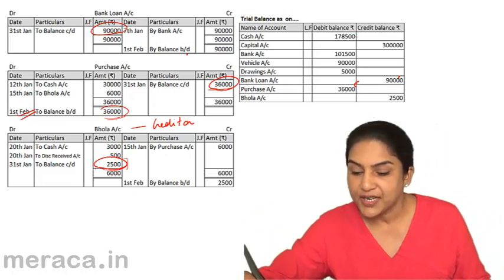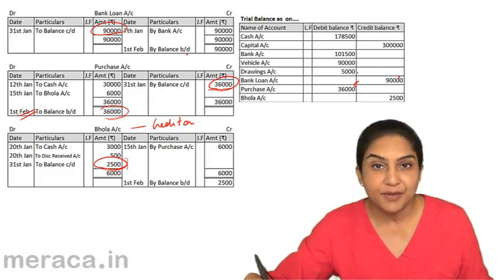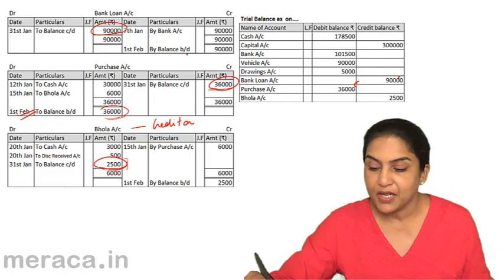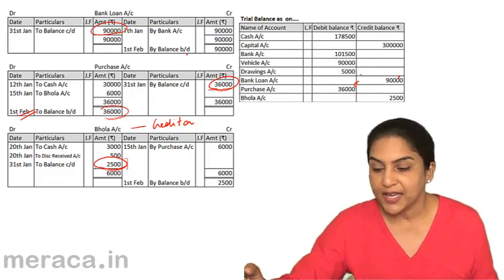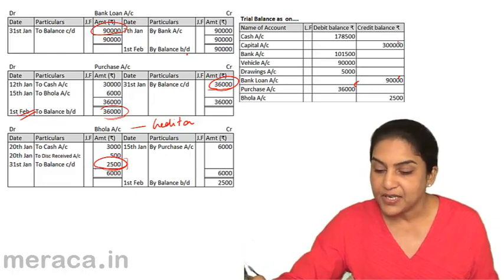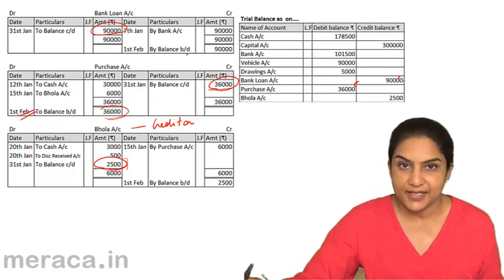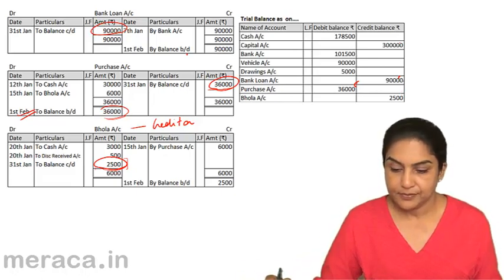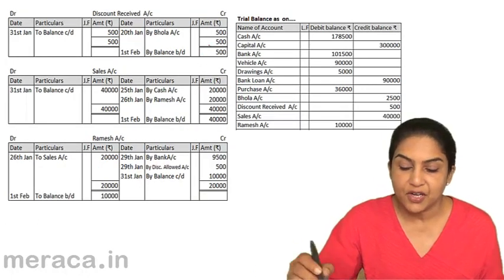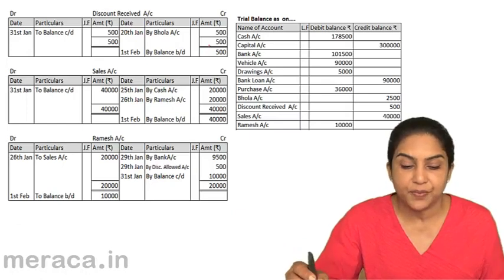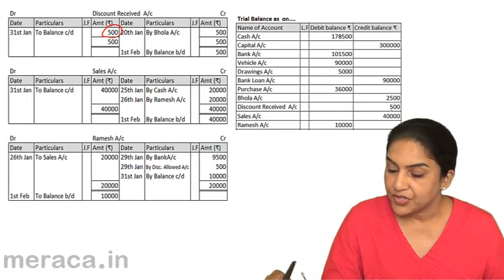If you notice: cash is an asset, bank is an asset, vehicle is an asset, drawings is an asset because it is a receivable, and purchases account is an expense. On the other side — the credit side — we have capital, which is a liability or equity; bank loan, a liability; and Bola, a creditor account. There is also discount received — discount received is income, and logically it should be a credit balance. Yes, it's 500. Credit. Discount received: 500.